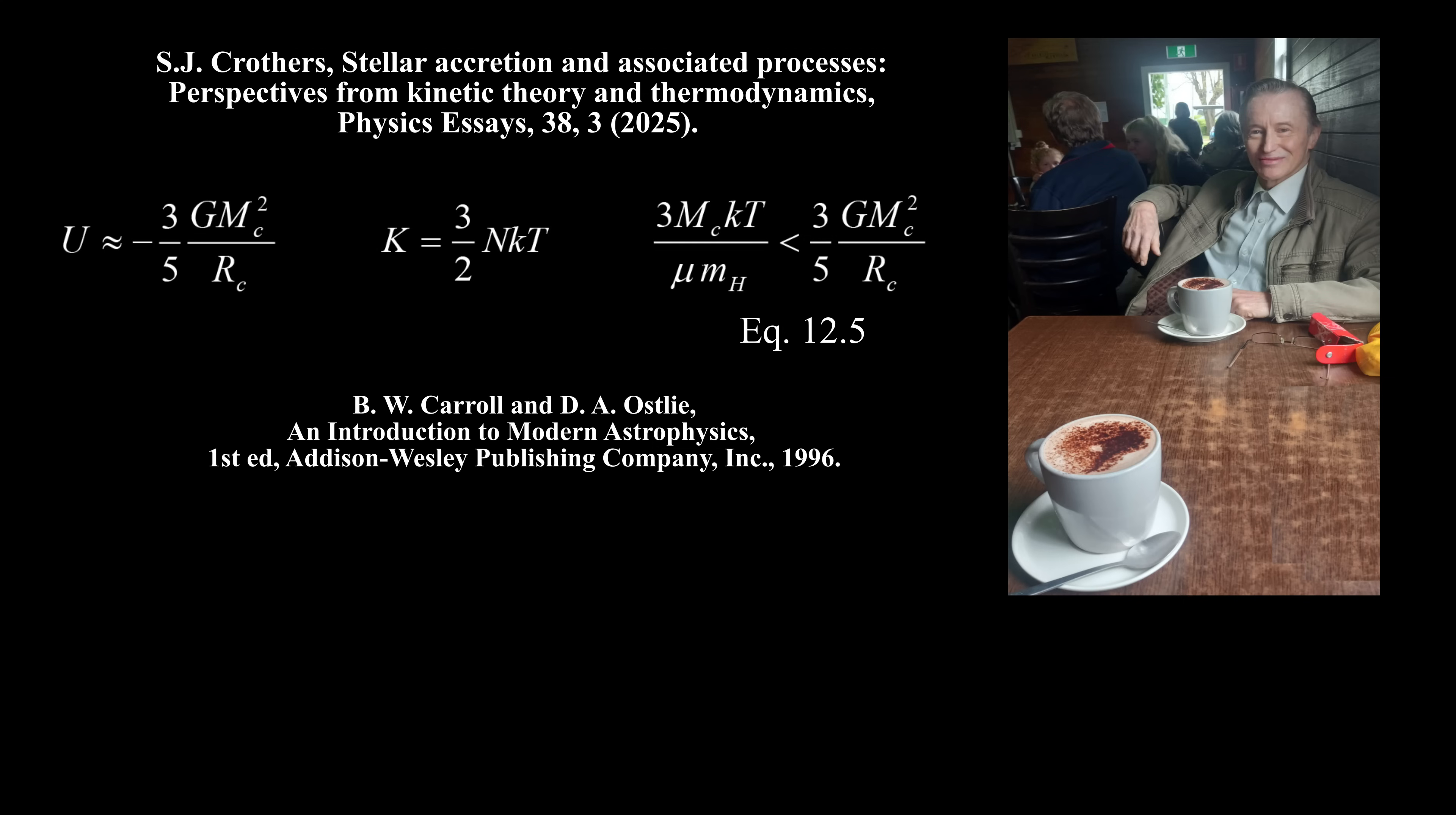First, since there are no forces between the particles of an ideal gas, except when they collide elastically with one another and the walls of their container, there is no gravitational potential energy. Secondly, the left side of their inequality is extensive, that is, homogeneous degree 1, but the right side is not extensive because it is homogeneous degree 1 and 2 thirds.